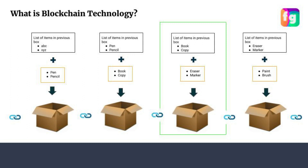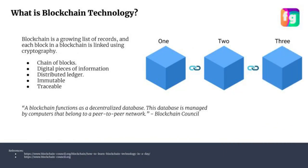You also added one more feature — immutability. Making changes is not easily possible, because if you change the items in the second box, you also have to make changes in the third box, because it contains the list. And if you want to change that box, you also have to change the box after it, because it also contains information of the previous box. So we have created a chain of boxes — and this is a 'box chain.' In digital form we call it a blockchain, and this box is replaced with a 'block.'